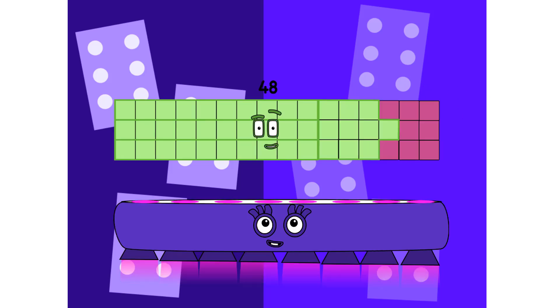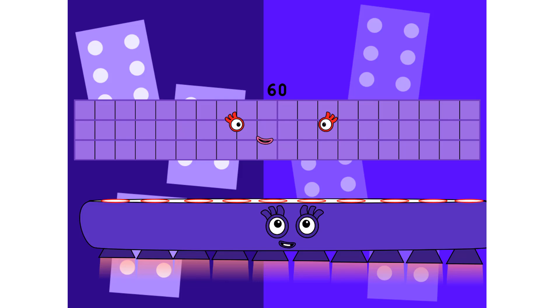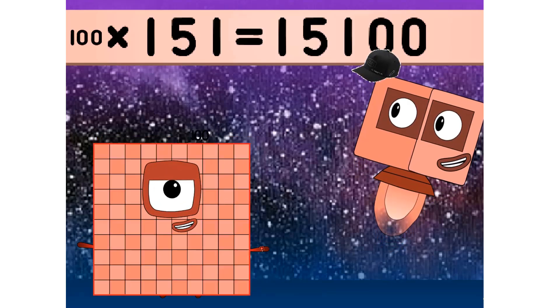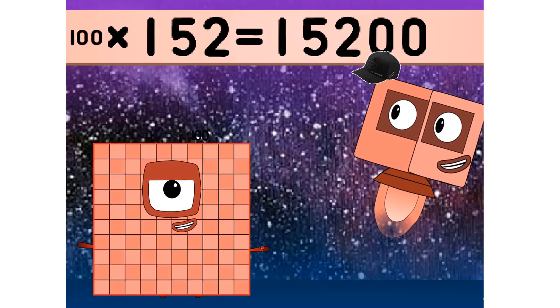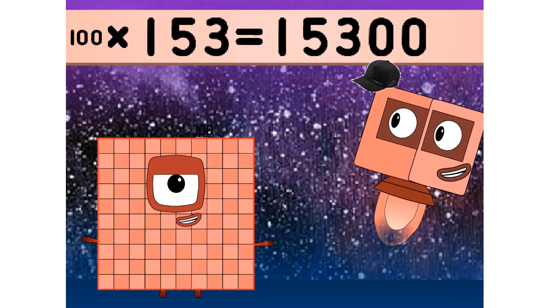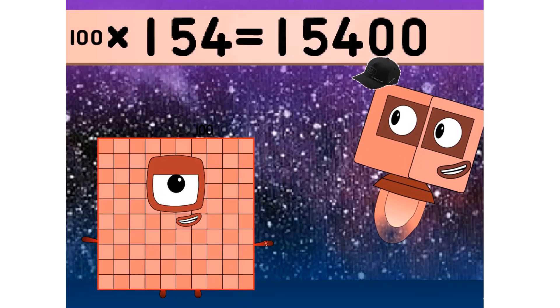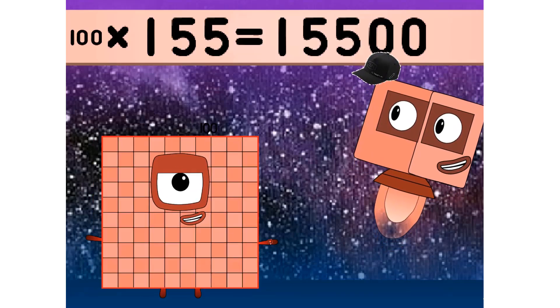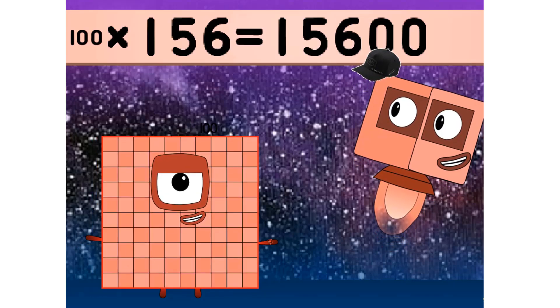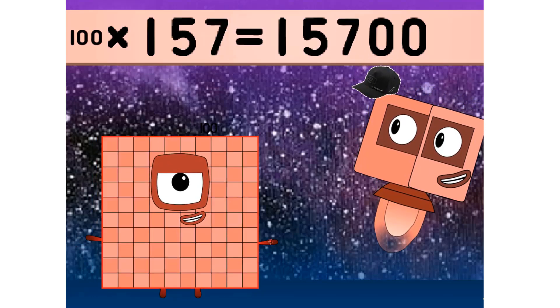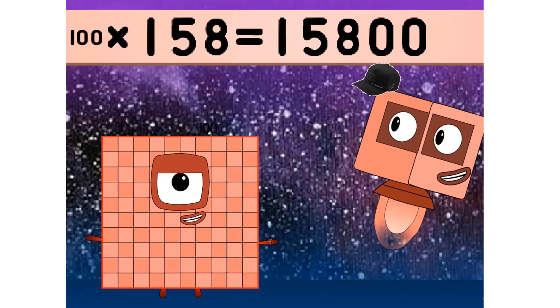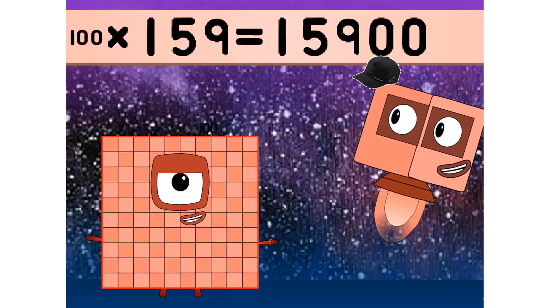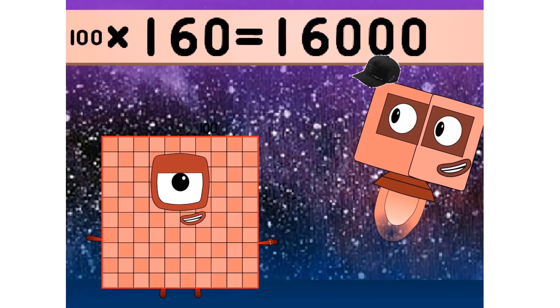75 times 100 equals 7500. 151 times 100 equals 15100. 152 times 100 equals 15200. 153 times 100 equals 15300. 154 times 100 equals 15400. 155 times 100 equals 15500. 156 times 100 equals 15600. 157 times 100 equals 15700. 158 times 100 equals 15800. 159 times 100 equals 15900. 160 times 100 equals 16000.